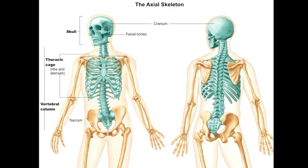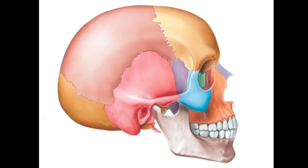Today we're going to talk about the axial skeleton, and in particular the skull and facial bones. Remember, the axial skeleton is comprised of the skull, thoracic cage, and the vertebral column. But today we're just going over the skull and some of the features.